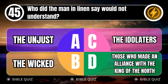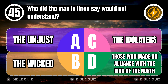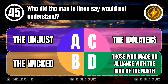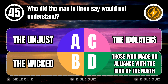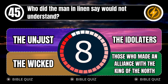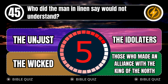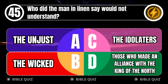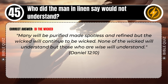Question 45: Who did the man in linen say would not understand? A. The unjust. B. The wicked. C. The idolaters. D. Those who made an alliance with the king of the north. Correct answer: B. The wicked. Many will be purified, made spotless and refined, but the wicked will continue to be wicked. None of the wicked will understand, but those who are wise will understand. Daniel 12 verse 10.